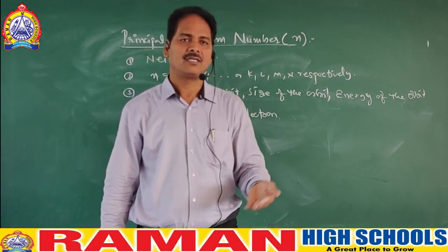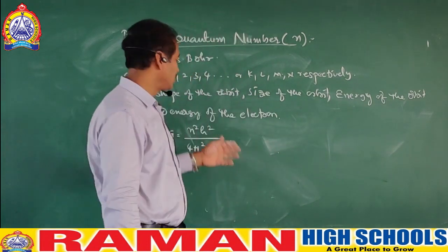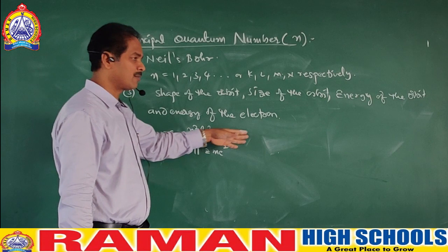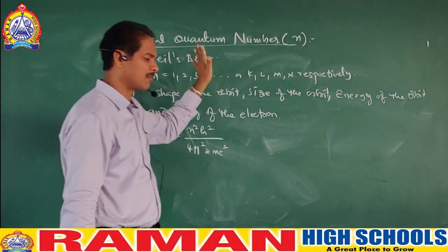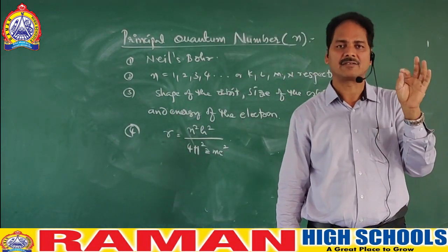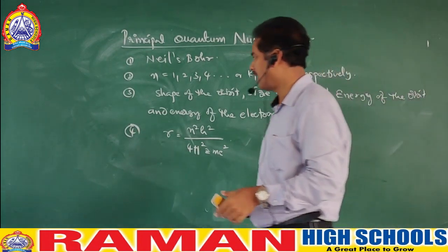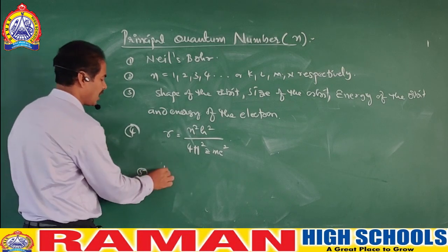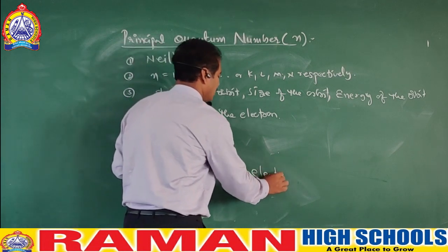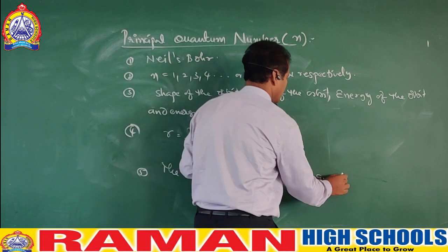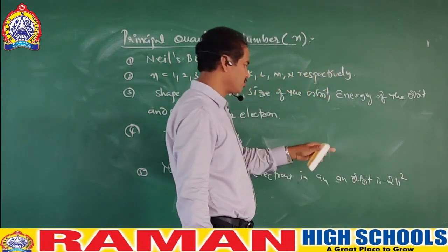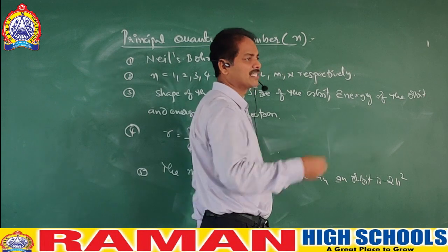Similarly, the energy of the orbit and the energy of the electron — these four values are calculated for hydrogen. Those formulas you will come to know in your intermediate studies. The maximum number of electrons present in an orbit is given by 2N². So 2N² will tell us how many electrons are present in a particular orbit.